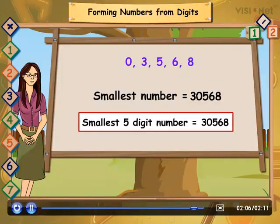So, now we have the smallest 5 digit number, that is 30568. I think this is good.